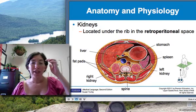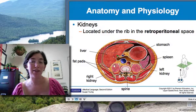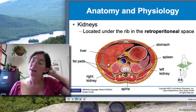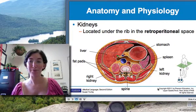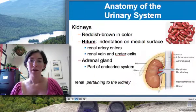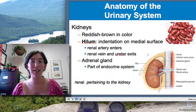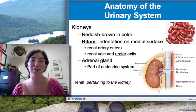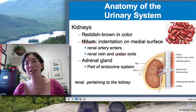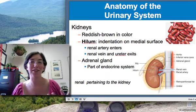The kidneys are located in the retroperitoneal space. Here's the liver on the right side, and this would be the right kidney, positioned a little bit lower. The kidneys are shaped like kidney beans — or I guess kidney beans are shaped like kidneys. The kidney beans are surely named after the shape of the organ, and they're also similar in color: a reddish-brown color.